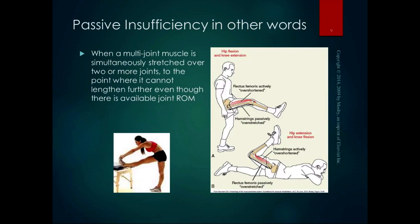Passive insufficiency, in other words, is when a multijoint muscle is simultaneously stretched over two or more joints passively to the point where it cannot lengthen further even though there's available range of motion in the joint. Here, that same girl is stretching her hamstrings — it's a passive stretch, and we know she's got more range of motion in her hip, but she can't go any further because that muscle is maximally stretched over two joints. With hip flexion and knee extension, the rectus femoris is actively overshortened; if he had his foot resting, the hamstrings could be passively overstretched. In the bottom picture, the hamstrings are actively overshortened and the rectus femoris is passively overstretched.